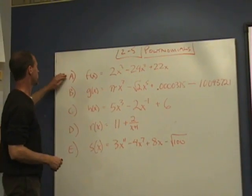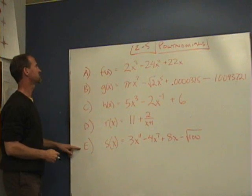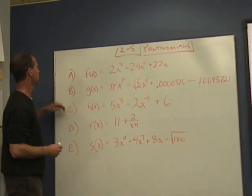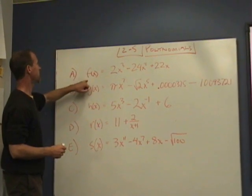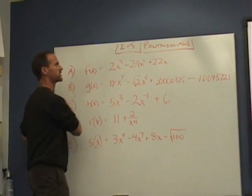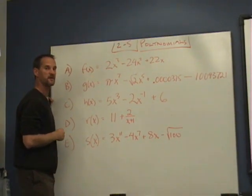We're back with our list of five possible polynomials. We just want you to give these a thumbs up or not. So A reads f(x) = 2x^3 - 24x^2 + 22x. What do you think, thumbs up or not?